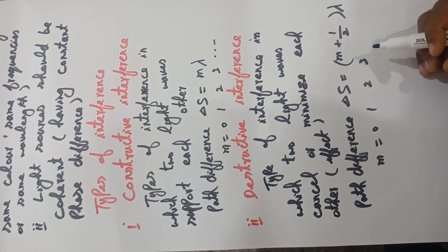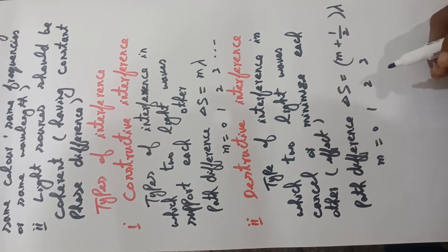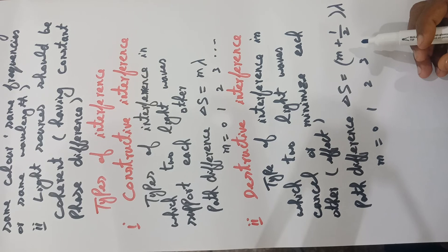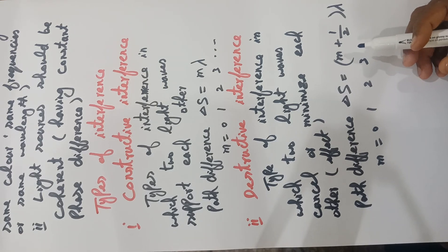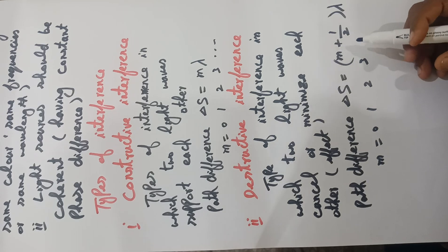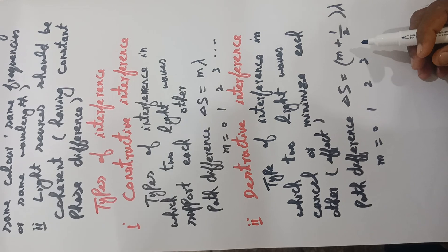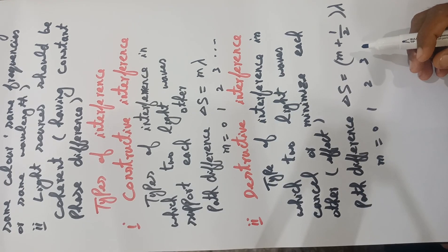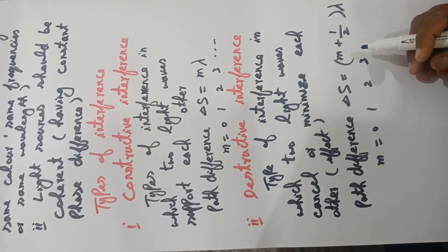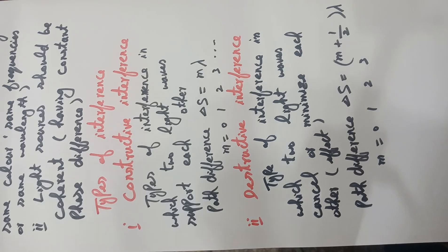If two light waves have a path difference equal to an odd integral multiple of their wavelength divided by two, then they will interfere destructively. Due to destructive interference, a dark band or dark fringe is produced and the brightness of light decreases.